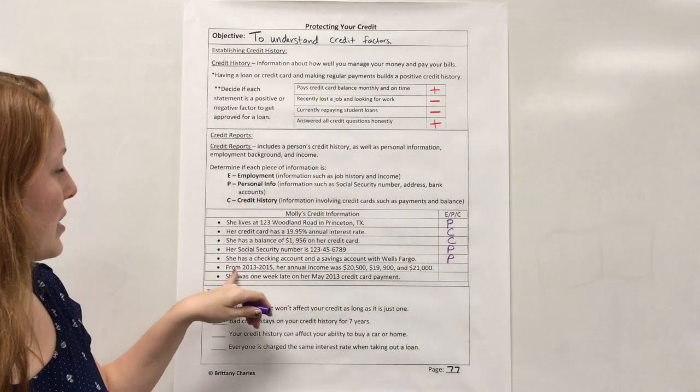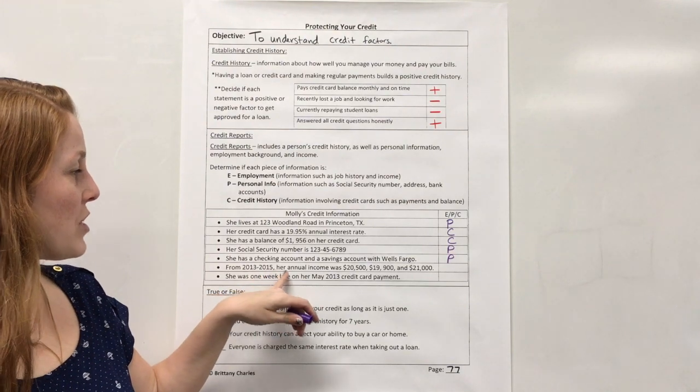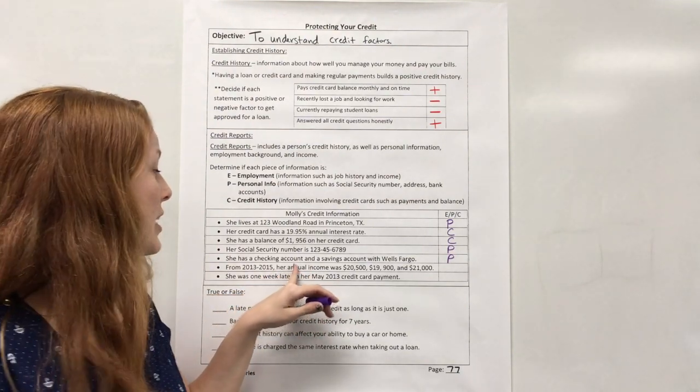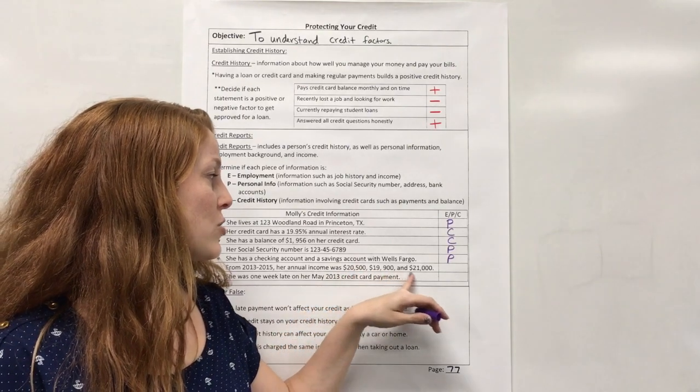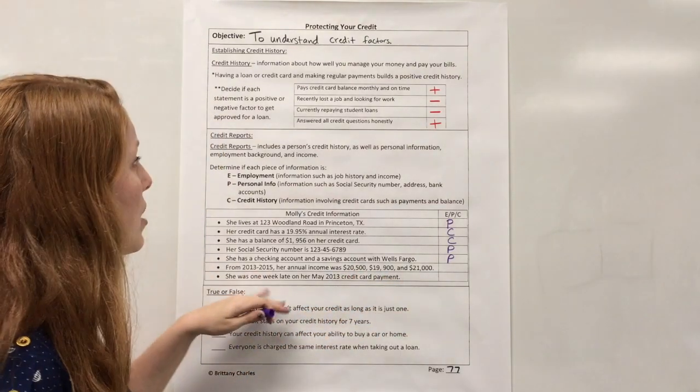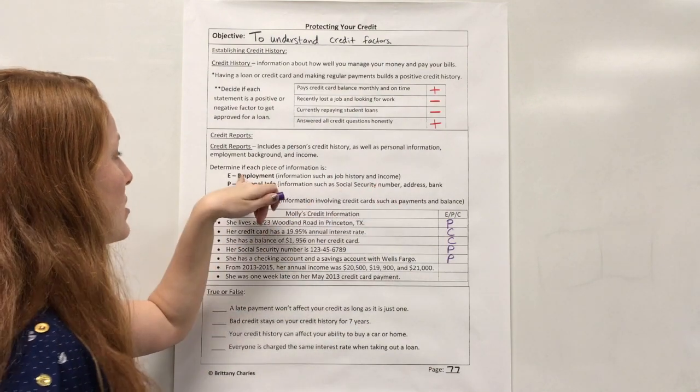All right. And from 2013 to 2015, her annual, annual meaning yearly, income was $20,500, $19,900, and $21,000. That's about her income. So that has to be employment.